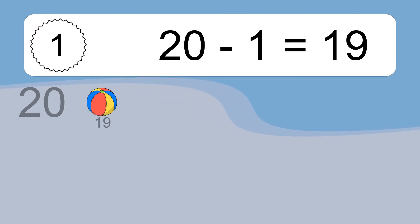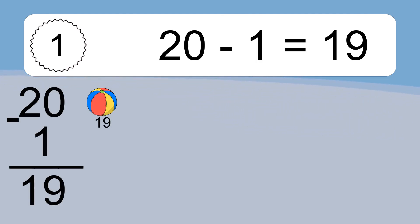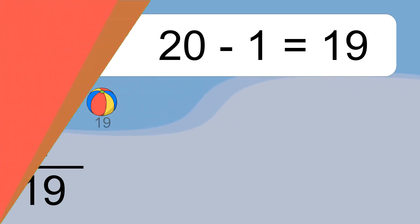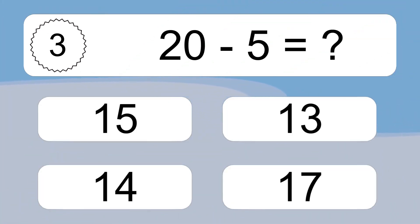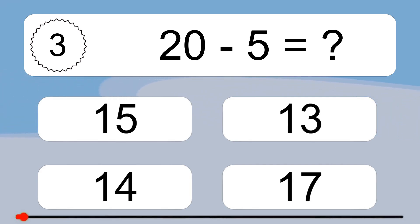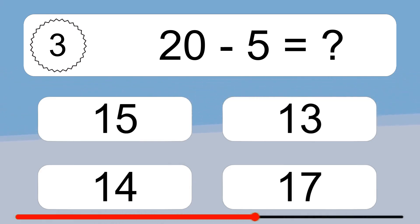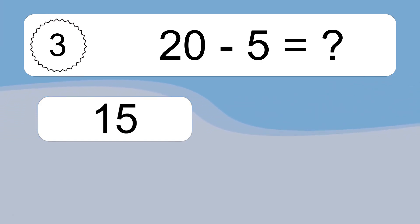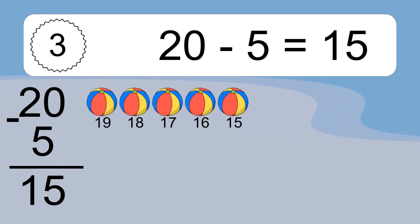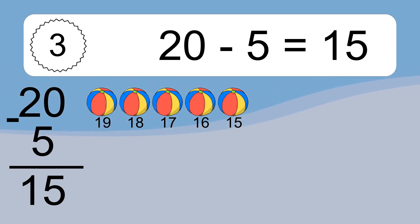20 minus 1 equals 19. Let's count it! 19. 20 minus 5 equals what? 20 minus 5 equals 15. Let's count it! 19, 18, 17, 16, 15.